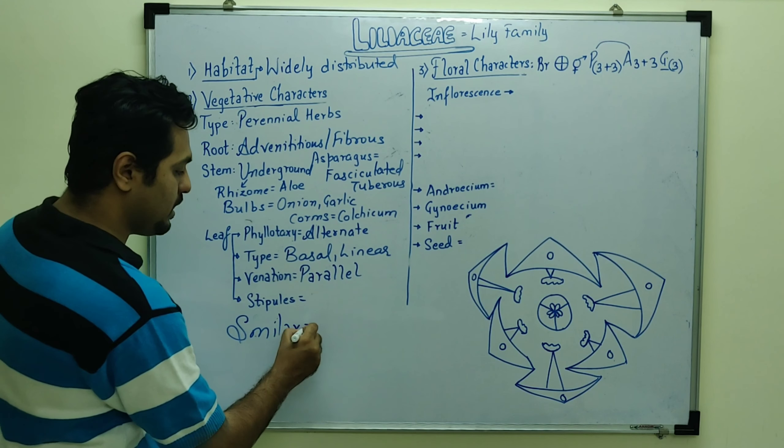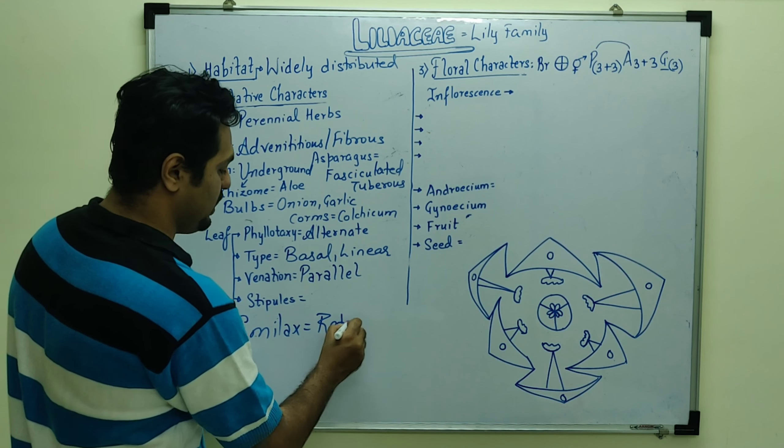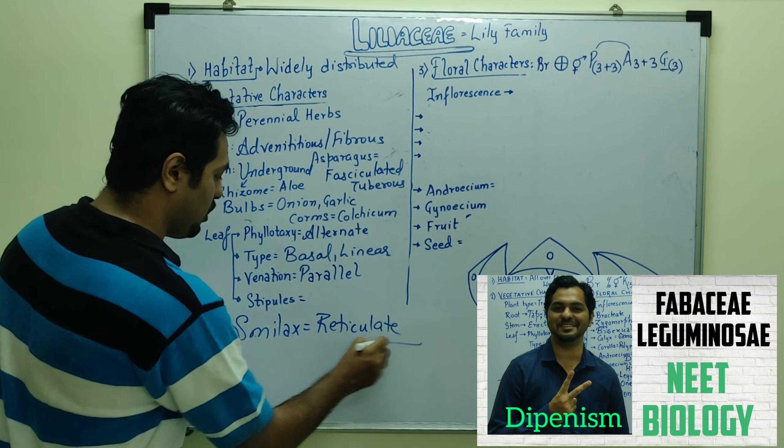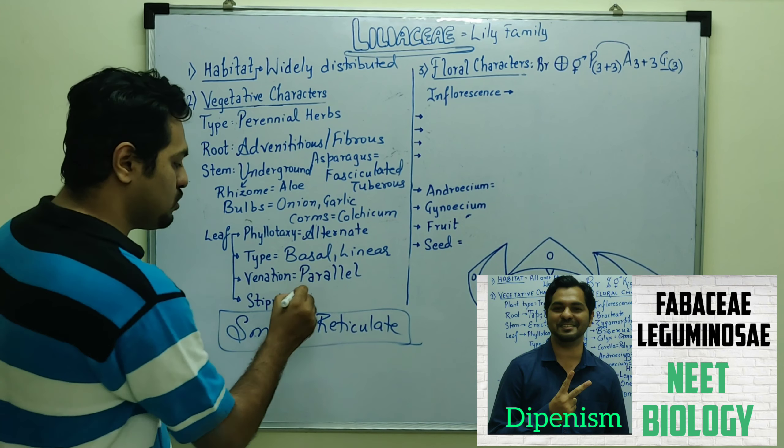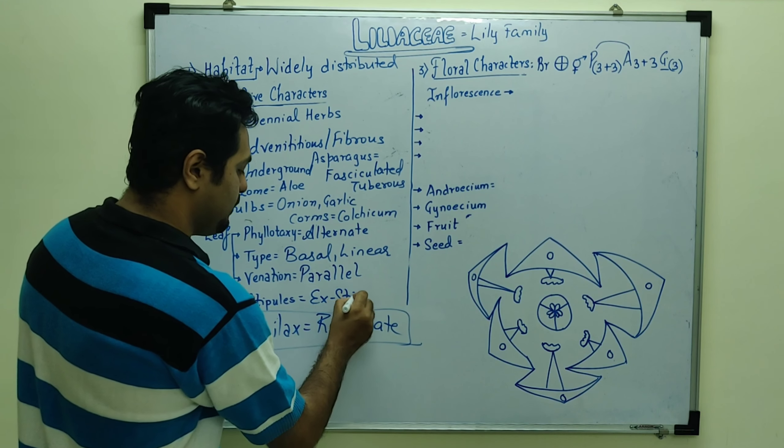Exception we can see in entrance, that is the Smilax. Monocot, which belongs to this family. But it is reticulate venation. So this is a very important key point which we can remember in entrance.